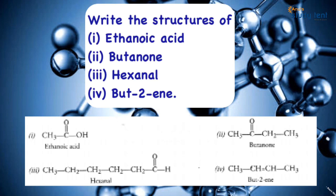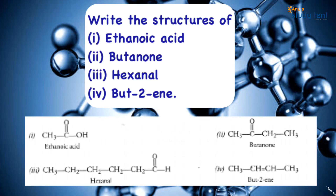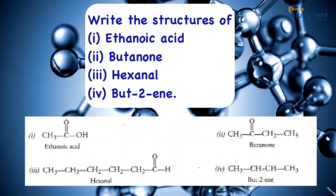Hexanol has 6 carbon atoms and contains the aldehyde group, that is the CHO group. Butene (but-2-ene) has 4 carbon atoms — '2-en' indicates a double bond at the second carbon. The double bond position is always specified by a number.